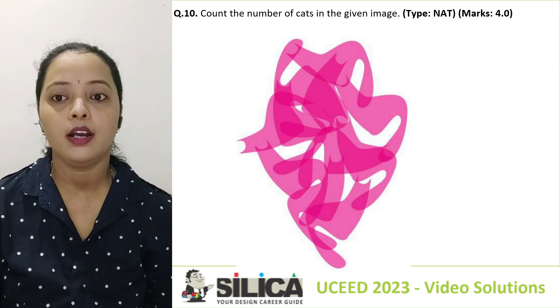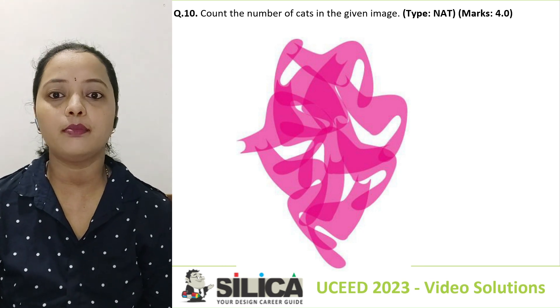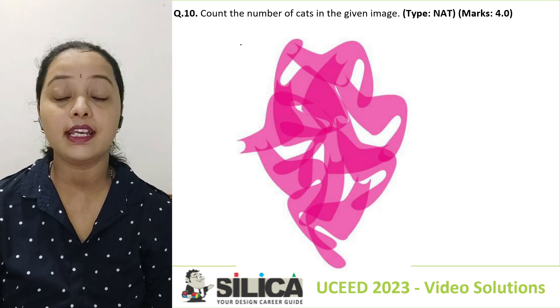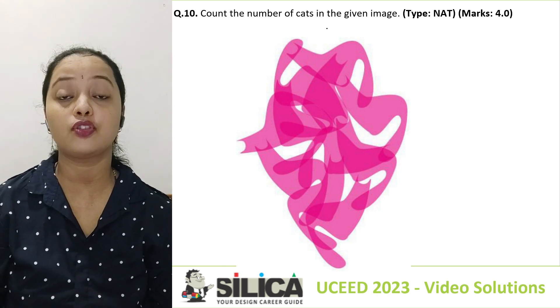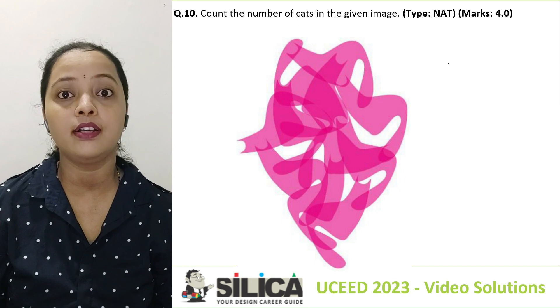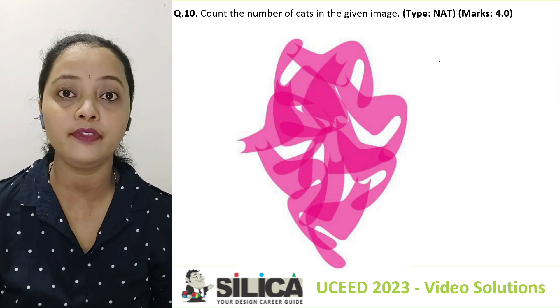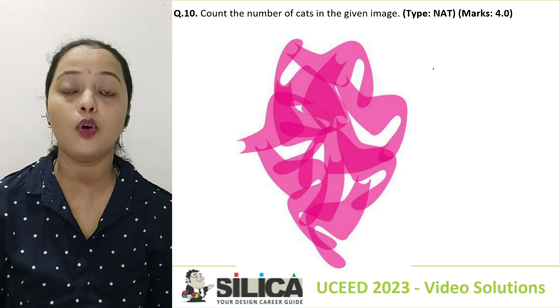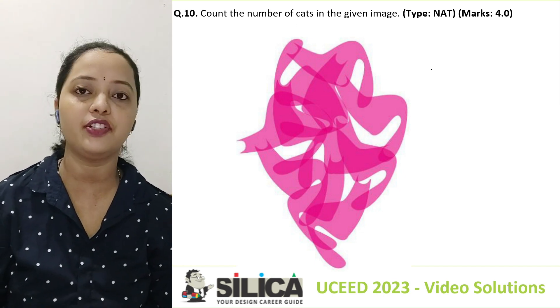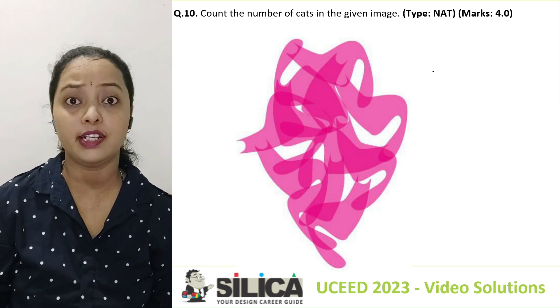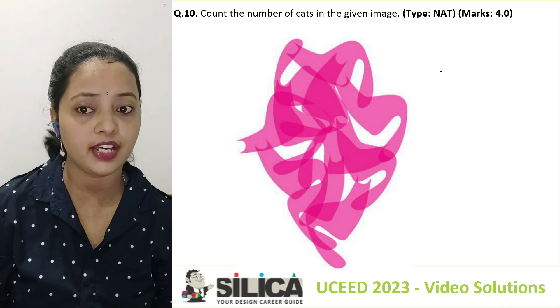What does it say? Count the number of cats in the given image. This is quite similar to question number 9 where we are supposed to observe the image carefully. So let's count the number of cats.